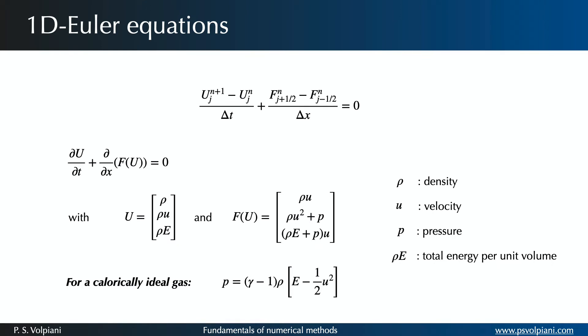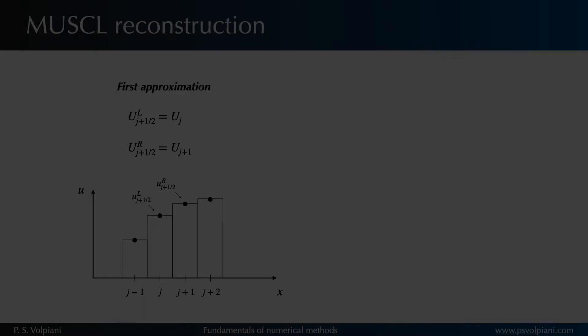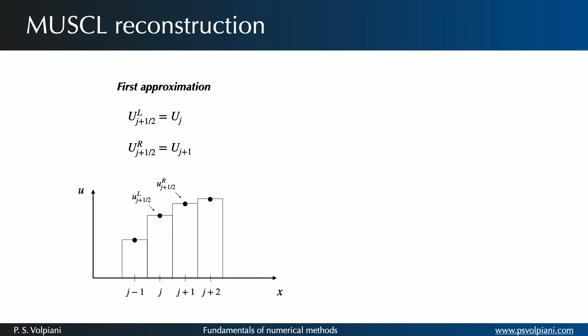Let's consider the following general discretization of a conservative problem, where the numerical flux F is a function of the neighboring states of interface. Let us denote by UL and UR the values of the state vector respectively to the left and to the right of the interface. A first order approximation is used in the Roe's scheme.